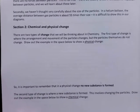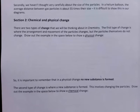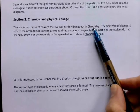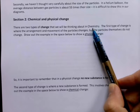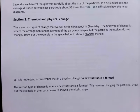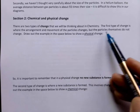Moving on to section two: chemical and physical change. There are two types of change in chemistry. Chemistry is all about change — that's where chemical reactions come in. The first type of change is where the arrangement or movement of particles changes, but the particles themselves do not change.